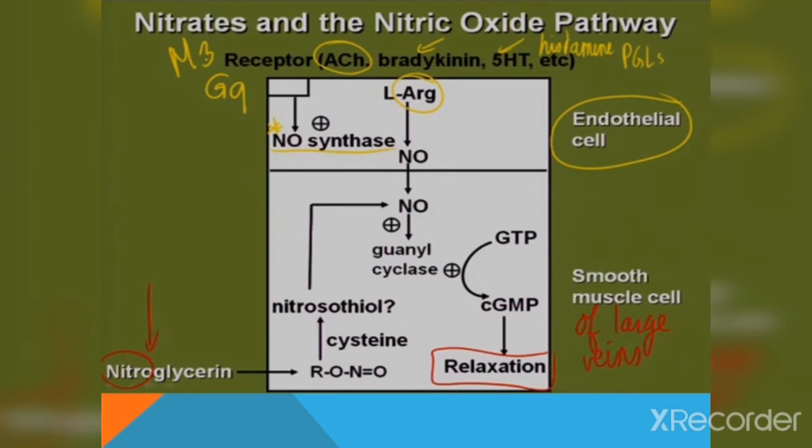We also have acetylcholine and its receptor, which is a Gq-coupled receptor present on the vasculature. When it is activated by a direct agonist, it utilizes nitric oxide or endothelium-derived relaxing factor to activate guanylyl cyclase enzyme and increases the levels of cyclic GMP, causing vasodilation.